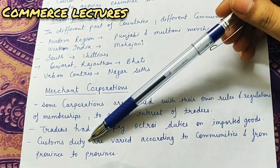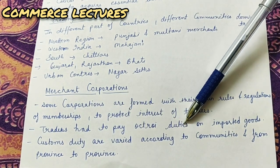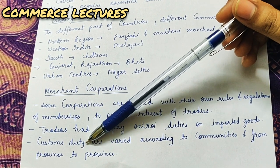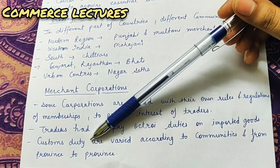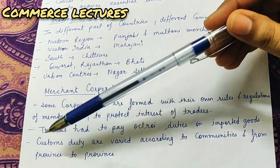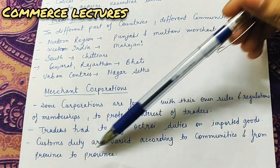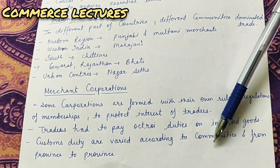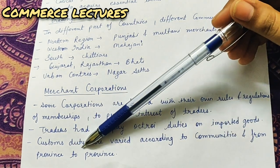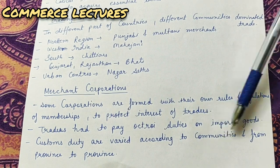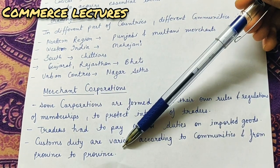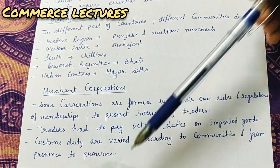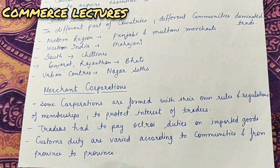Along with octroi duties, all traders also had to pay customs duty. Customs duty is almost similar to octroi duty, but the difference is that when any good is imported from another country into our own country, the tax we pay is customs duty. Both these duties had to be paid by traders to Merchant Corporations, and they varied according to communities - different duties for different communities, some less, some more - and from province to province, i.e., different rates for different provinces or regions.